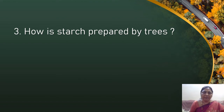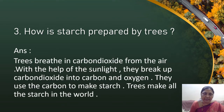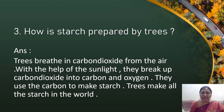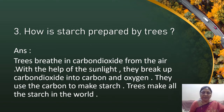Third question: How is starch prepared by trees? Answer: Trees breathe in carbon dioxide from the air. With the help of sunlight, they break up carbon dioxide into carbon and oxygen. They use the carbon to make starch. Trees make all the starch in the world.